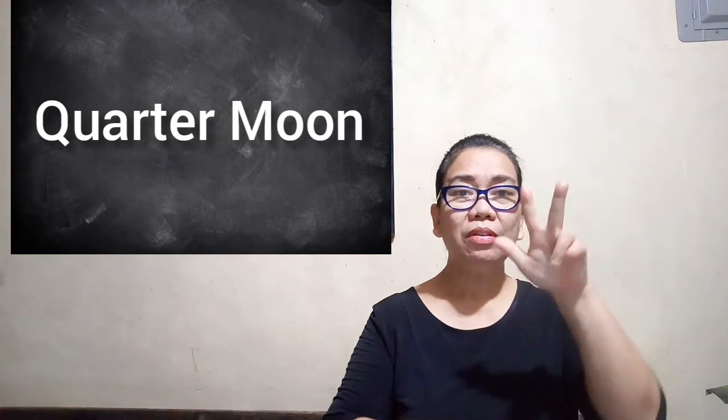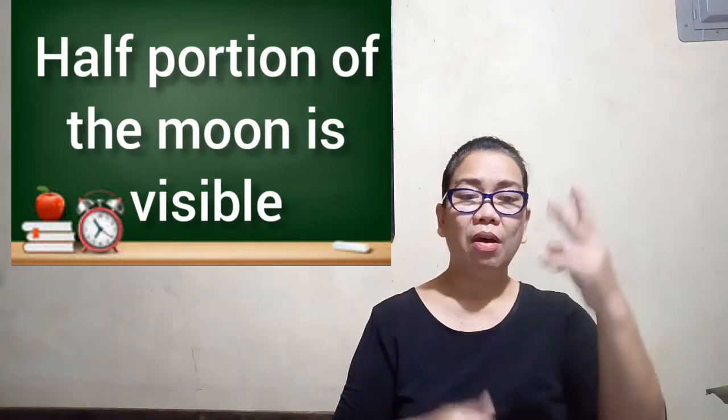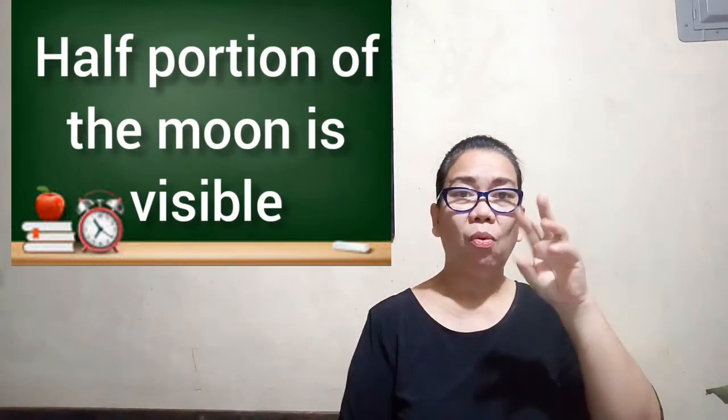The third phase is the first quarter moon, or we call it half moon. It is when half of the lit portion of the moon is visible after the waxing crescent phase. It comes a week after the new moon.